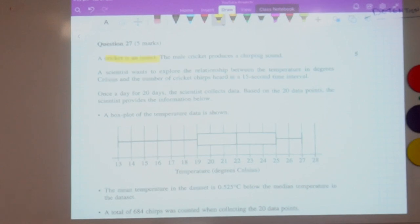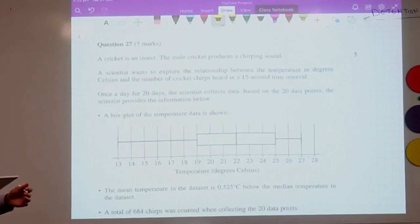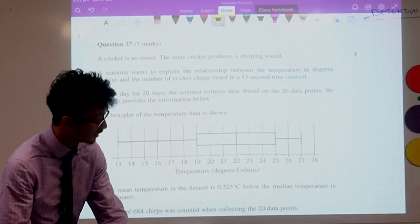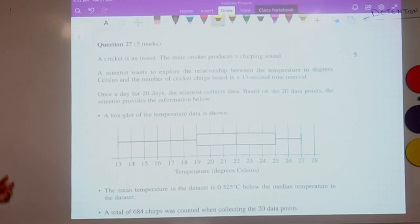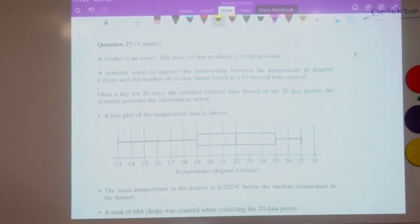Well, the first thing to realize is just to get your head around what's actually happening. A cricket is an insect. Now, let's have a look at what's actually going on. There's a scientist and he wants to explore the relationship between the temperatures in degrees Celsius and the number of cricket chirps heard in a 15-second time interval. So essentially what's going on here is that we've got a scientist and he goes around and he wants to compare two sets of data. We call this bivariate data. He's looking at comparing temperature, so whether it gets hotter or colder, and the number of cricket chirps.